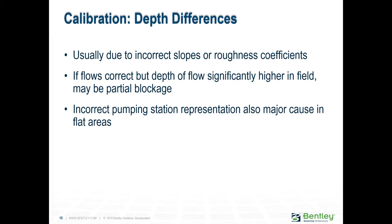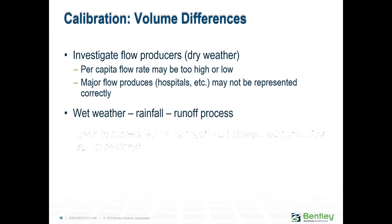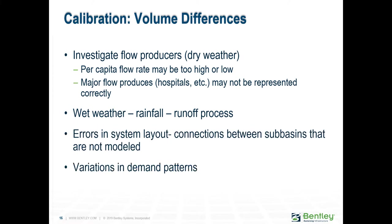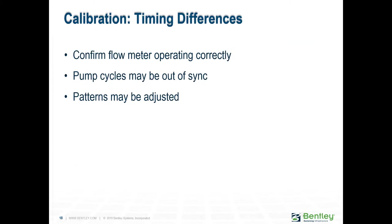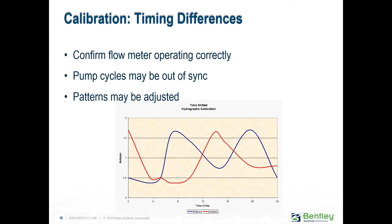Trouble matching on-off levels is usually caused by errors in the pump on-off settings or the geometry of the pump station wet well. Always confirm that meters are working correctly. Review the basin boundaries for potential points where customers and pipes may actually belong in a different basin because of errors in the piping. Sometimes your model predicts the correct overall total flow volume, but the shape of the hydrograph is way off. If the goal of the project is to determine the peak flow rate in the pipes, then when that rate occurs may be relevant.